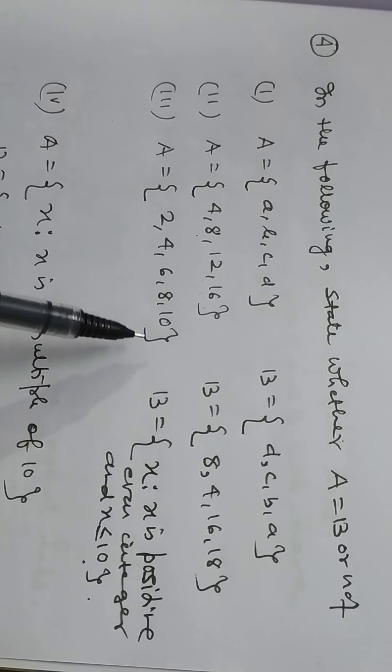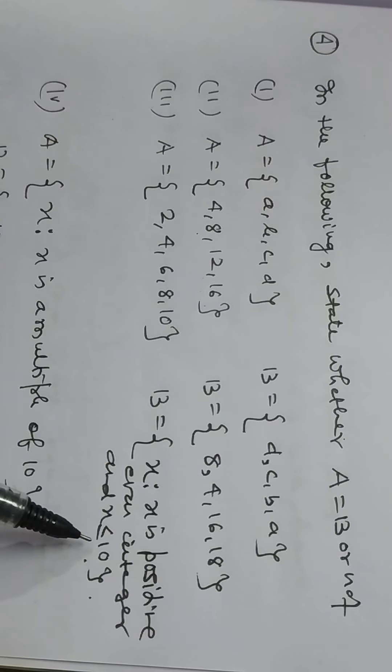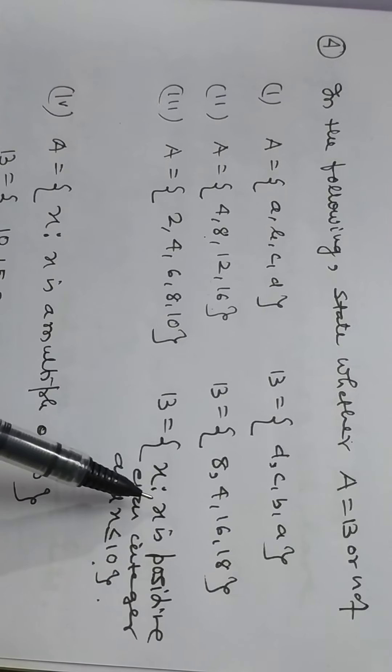2, 4, 6, 8, 10 and x is a positive even integer and x less than equal to 10, both are equal sets.